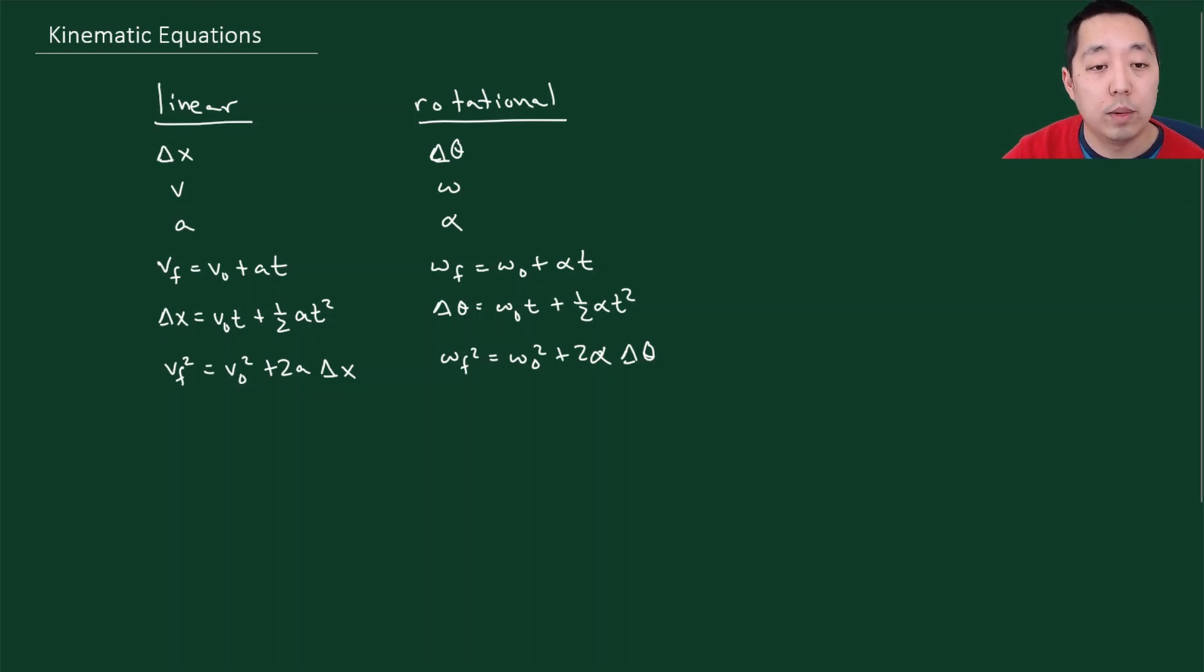So let's do an example problem. Say I have something that is spinning with an angular velocity equal to 2 radians per second. And I'm going to speed it up for 10 seconds with an angular acceleration of 1 radians per second squared. Okay, so I'm starting off with a certain spinning and I'm accelerating it for 10 seconds. And I'm using this amount of acceleration to speed it up.